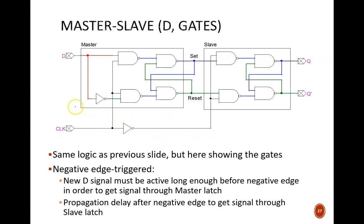We said before that this master-slave approach is more dependable than the simple gate delay method, but there are still some important specifications to consider. The clock frequency must be slow enough, or in other words, the clock period long enough for the D signal to propagate through these two layers of NAND gates.